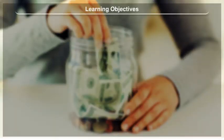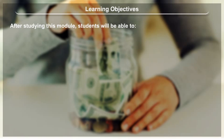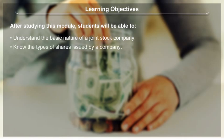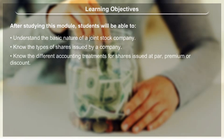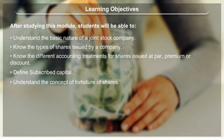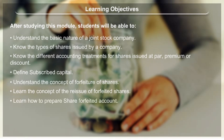Learning Objectives: After studying this module, students will be able to understand the basic nature of a joint stock company, know the types of shares issued by a company, know the different accounting treatments for shares issued at par, premium or discount, define subscribed capital, understand the concept of forfeiture of shares, learn the concept of reissue of forfeited shares, and learn how to prepare a share forfeited account.